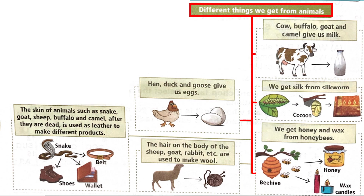Hen, duck, and goose give us eggs. The skin of animals such as snake, goat, sheep, buffalo, camel, etc., after they are dead, is used as leather to make different products. The hair on the body of sheep, goat, rabbit, yak, etc. is used to make wool. These are the key things that we get from animals.